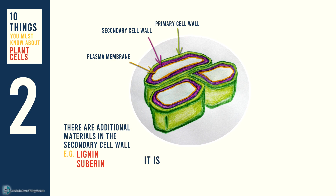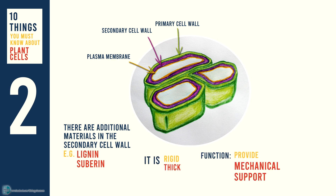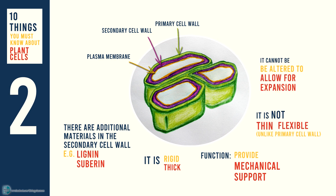They are rigid and thick, as their function is to provide mechanical support to the cell. Unlike the thinner and more flexible primary cell wall, it cannot be altered to allow for expansion. With that said, cells with a secondary cell wall will stop expanding.